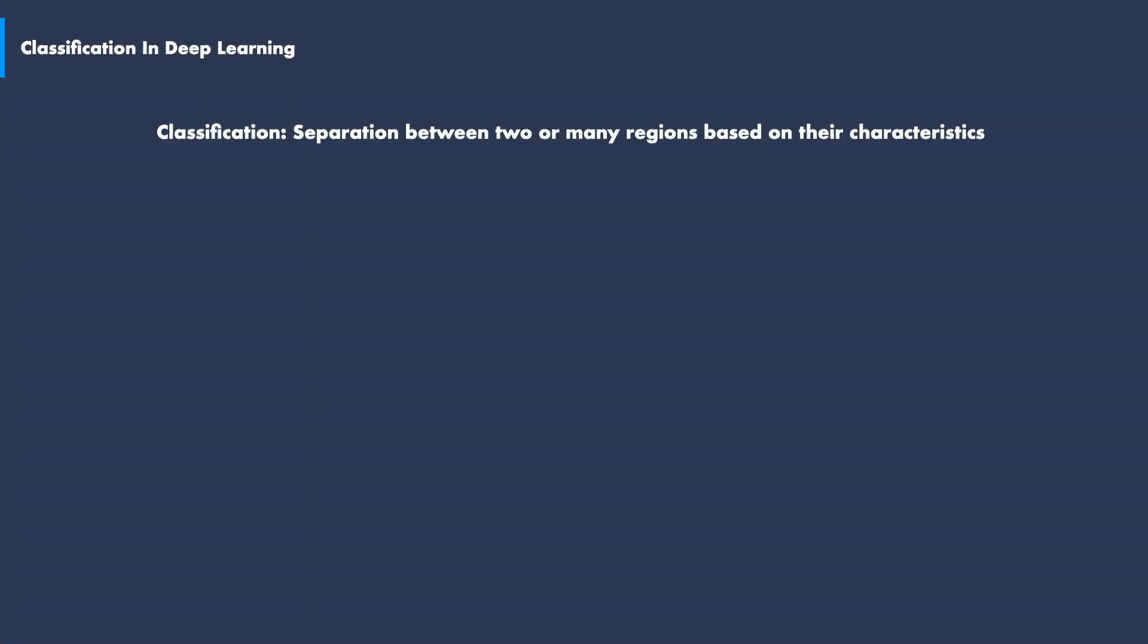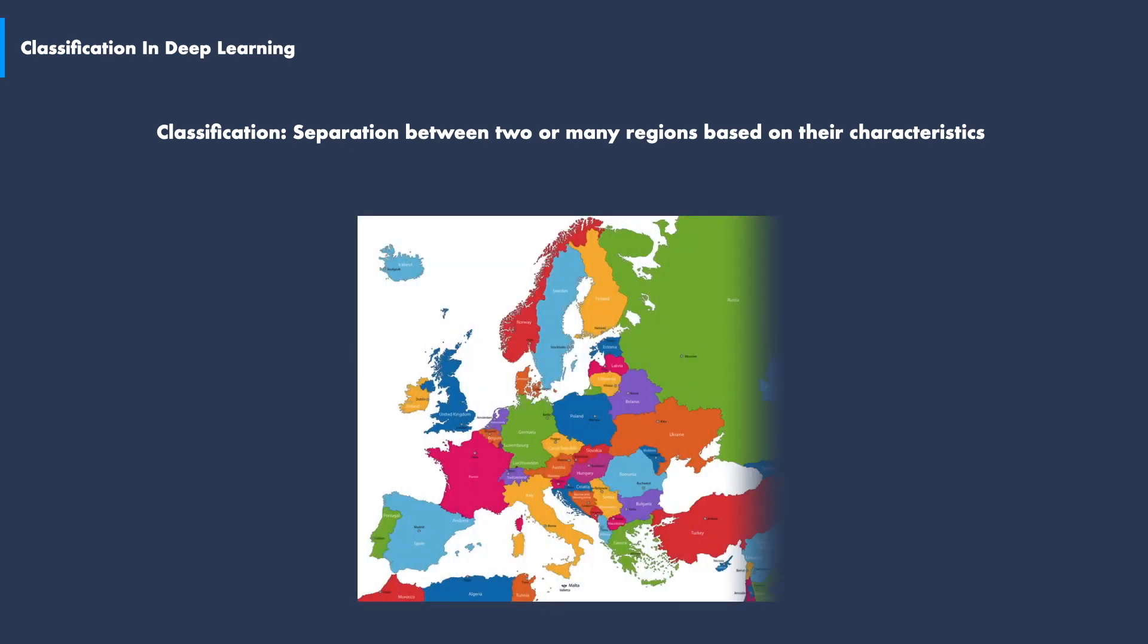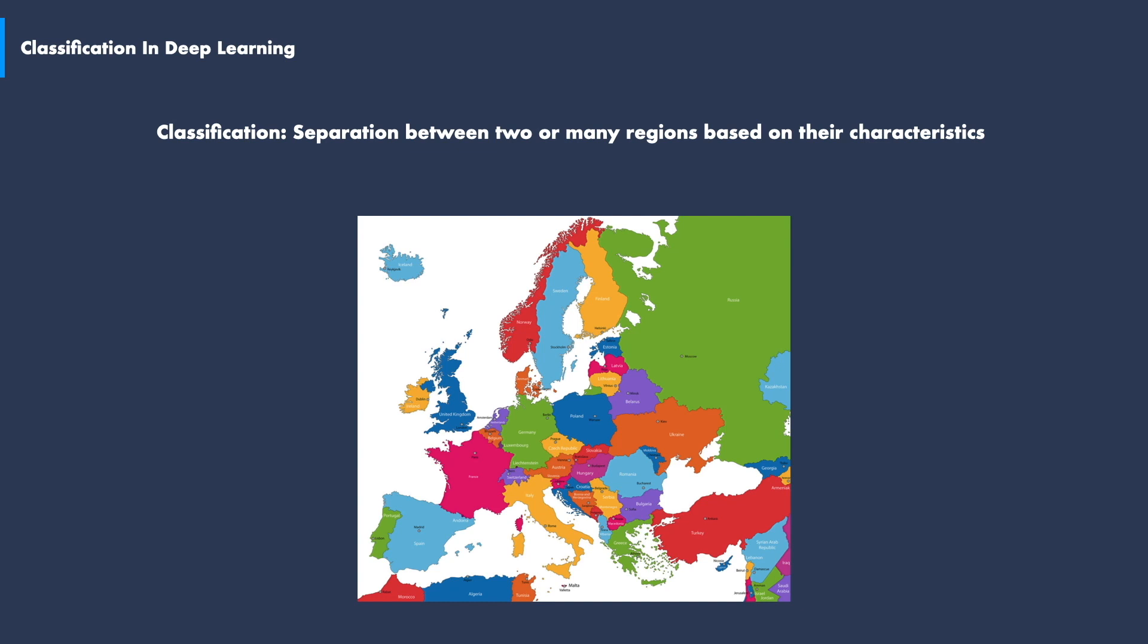Thus, in the context of deep learning, classification is the act of creating precise borders between data clusters based on their different classes. An analogy can be made with geography, where borders separate different countries. These borders can be viewed as different classes in the data set.